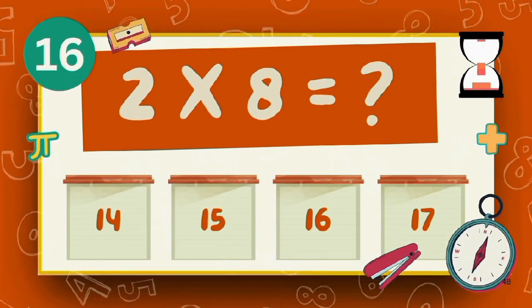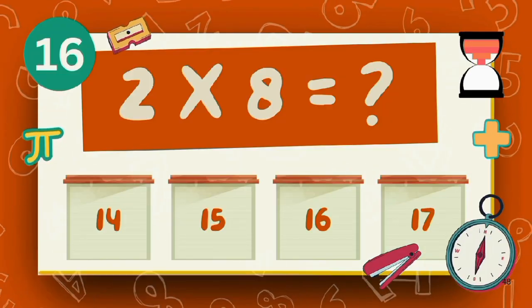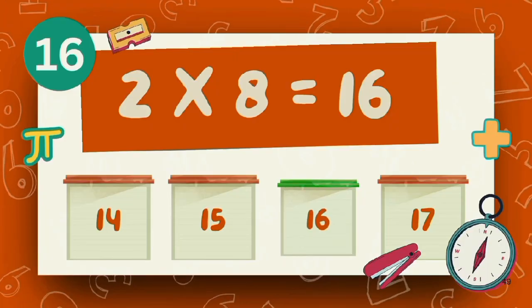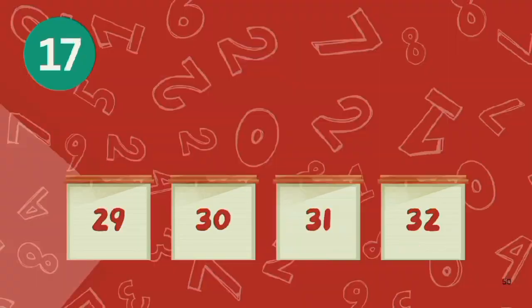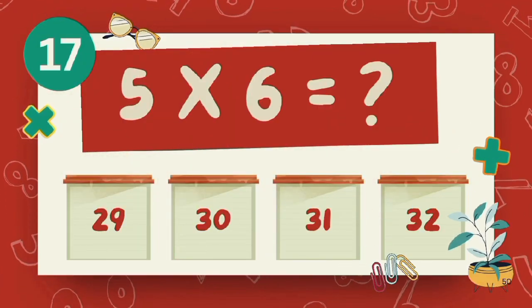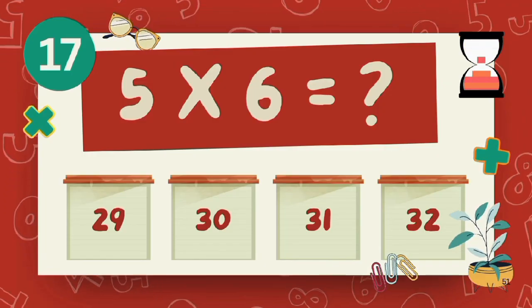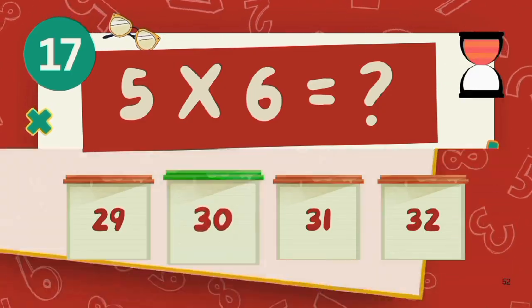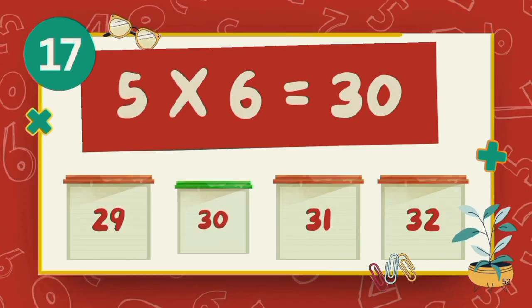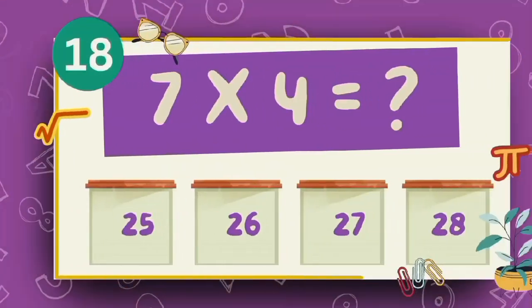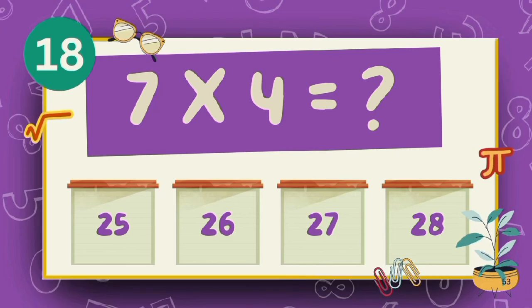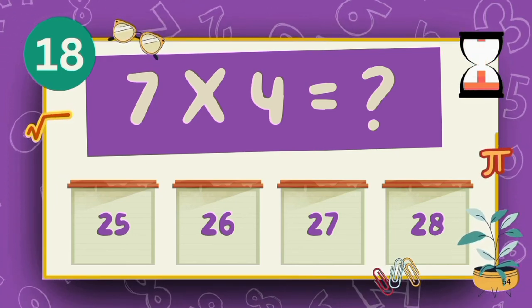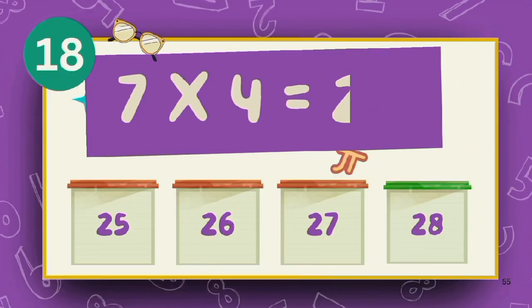What is 7 multiply 8? The answer is 30. What does 7 multiply 4? The answer is 28.